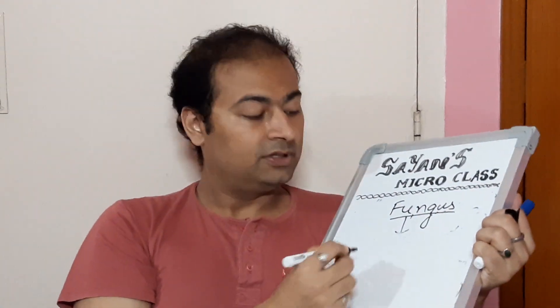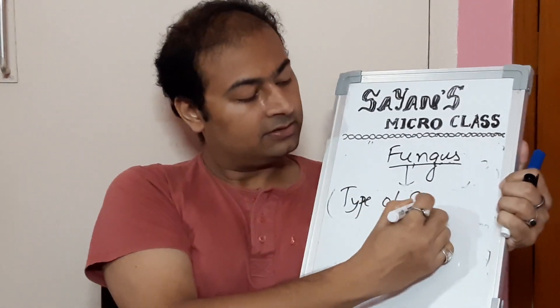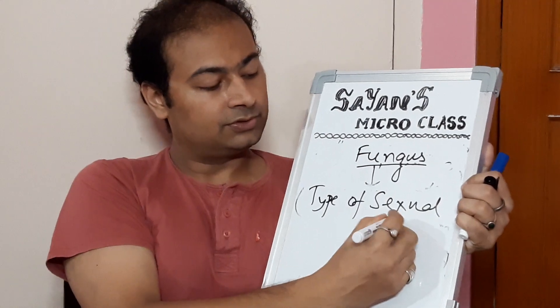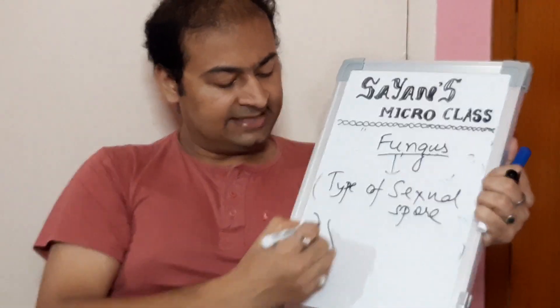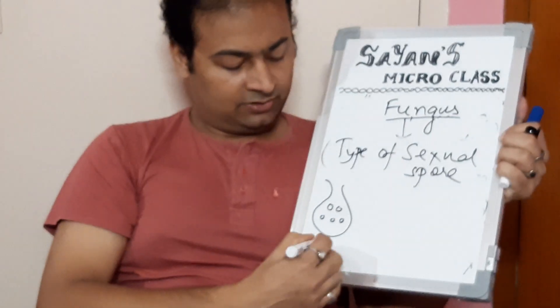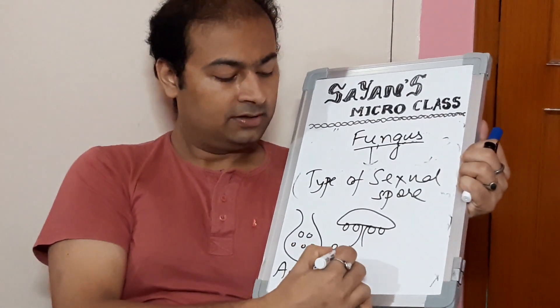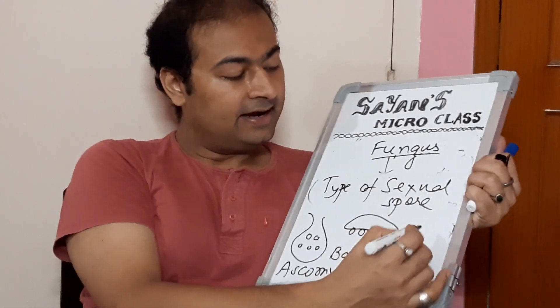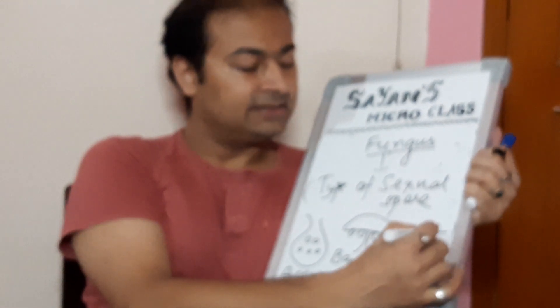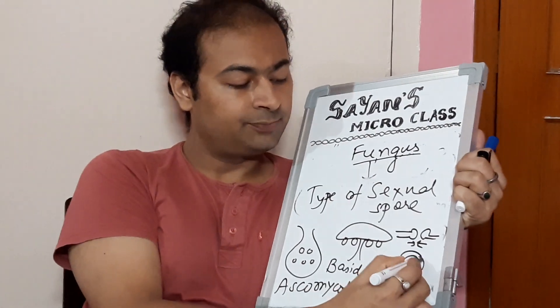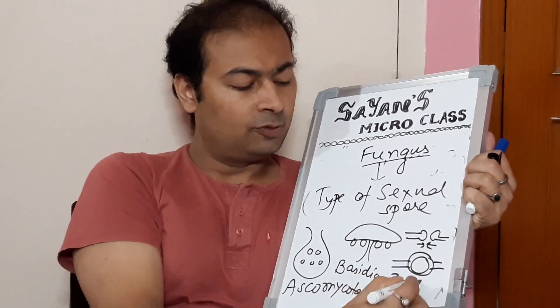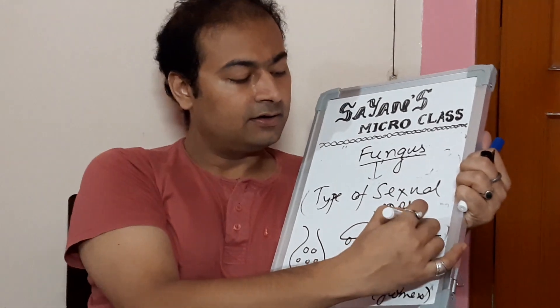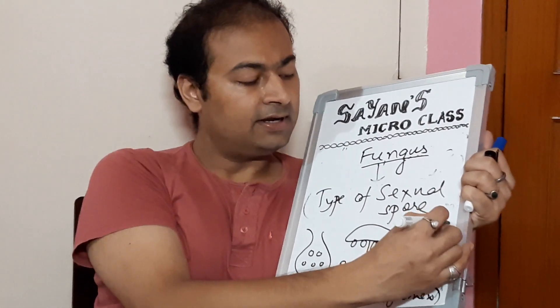Fungus can also be classified based on the type of sexual spore they produce. If they produce it like a sac, it is called ascomycota. If it is produced under an umbrella-like thing or basidium, like a mushroom, it is called basidiomycota. And if two haploid cells fuse together to form a diploid zygote spore, it is called zygomycota or glomeromycota. A few do not fall into any category — they are called chytridiomycota.